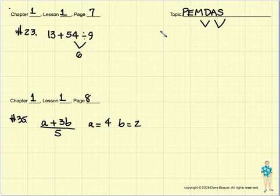54 divided by 9 turns out to be 6. Let's finish up with addition and subtraction. We have 13 plus 6. 13 plus 6, the answer turns out to be 19.